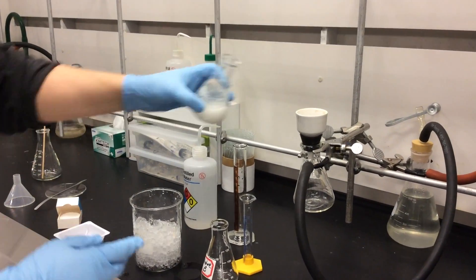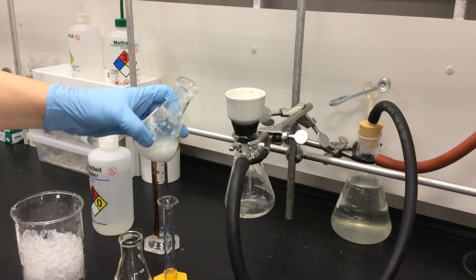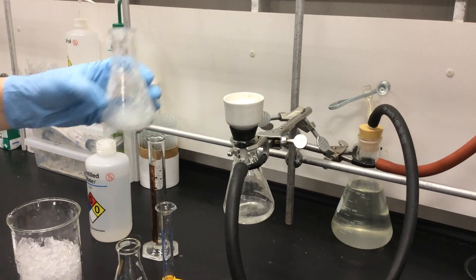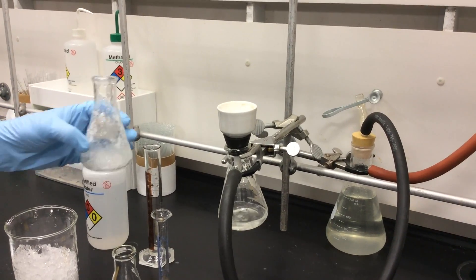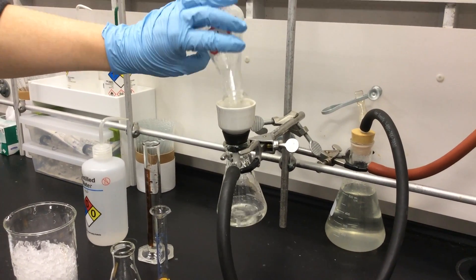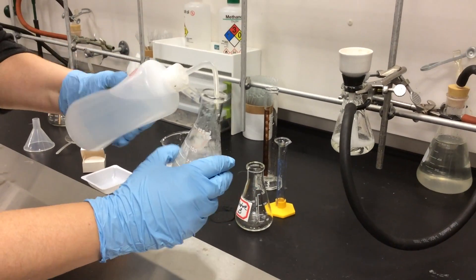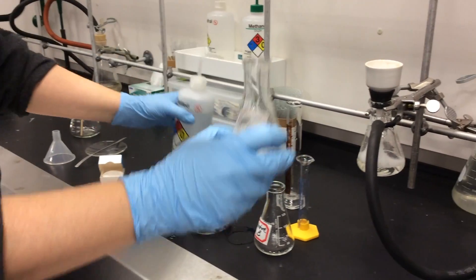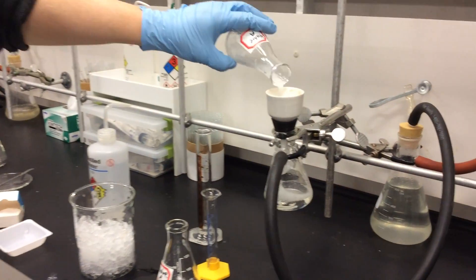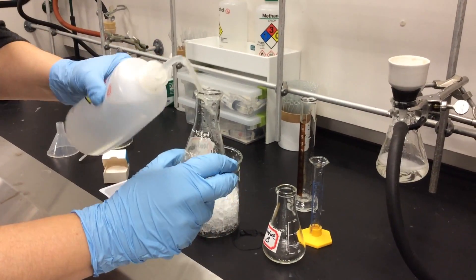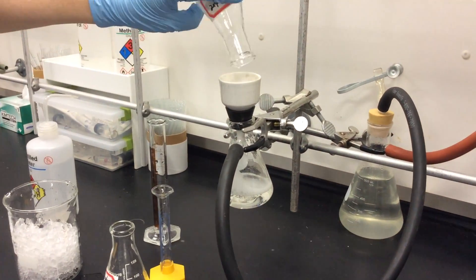Now we're ready to filter our acid anilide. We pour it into our Buchner funnel. As you can see, the crystals are staying inside the funnel, and the liquid is being separated from the crystals and falling to the bottom of the flask. To get all the crystals out of the original Erlenmeyer flask, you can rinse the flask with a little bit of water and just pour it into the Buchner funnel. And this is how we isolate our acid anilide.